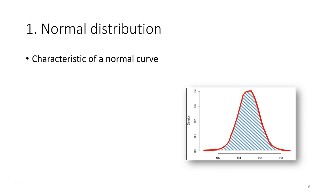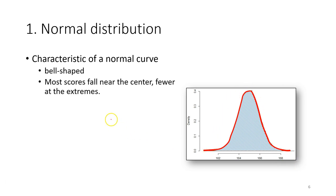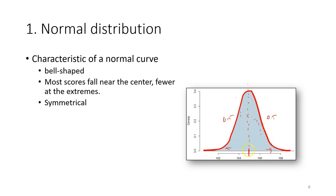For the normal curve — data that is normally distributed — there are a few characteristics. The distribution curve has a bell shape, and most of the scores fall near the center, with fewer at the extremes. One of the most important characteristics of the normal curve is that it is symmetric. The left and the right have the same amount of observations — 0.5 and 0.5 — so 50% of observations are on the right side of the mean and 50% on the left side.